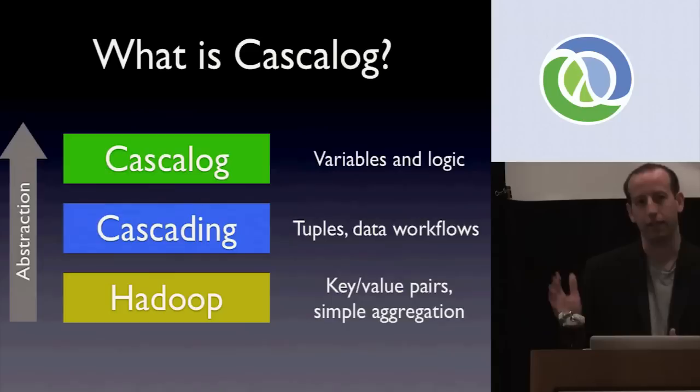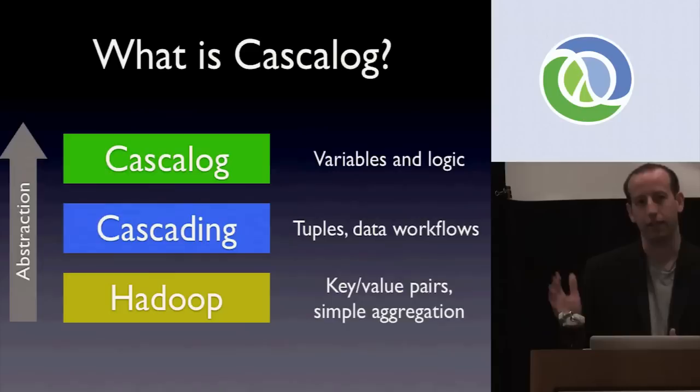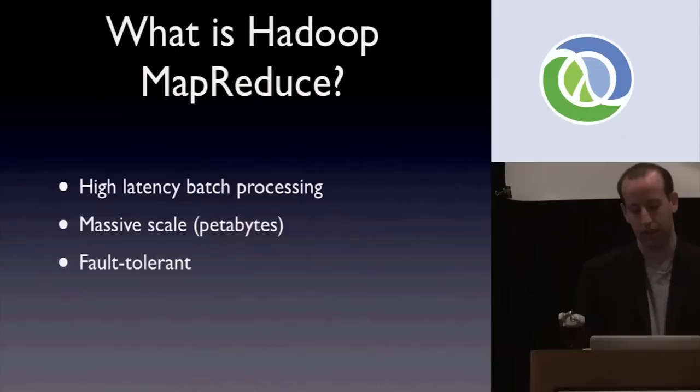Cascalog is a very high-level abstraction on top of Hadoop MapReduce. It lets you write MapReduce jobs in pure Clojure code, and it doesn't really look like MapReduce at all — but underneath, it executes in MapReduce.